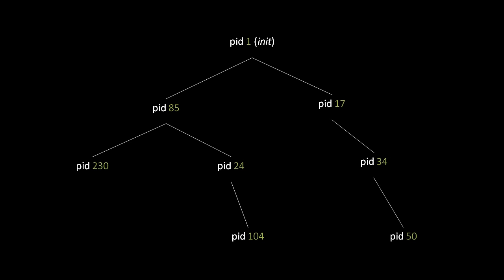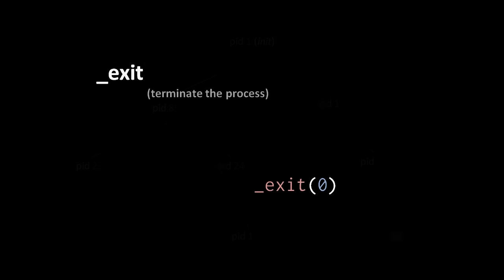Process ID numbers can be reused. So, for example, if you have a process with ID 29, once that process terminates, some subsequently created process might be given ID number 29. When a process chooses to terminate itself, it does so by invoking the exit system call. When we invoke the exit system call, we pass in a number called the exit code, which indicates to other programs what happened — why did it exit.